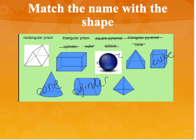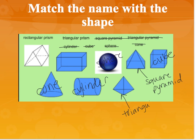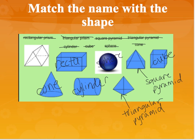Pyramids are named by their bases. So if this one has a square base, this is going to be a square pyramid. And then this one has a triangular base, so this is going to be a triangular pyramid. I also see a triangular prism and a rectangular prism. My rectangular prism is this one right here because it's a rectangle, and my triangular prism is this one right here.